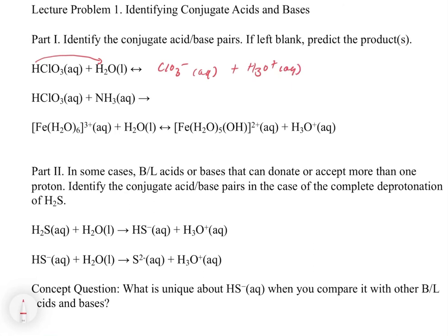To identify the conjugate acid-base pairs, we draw lines connecting them. HClO3 is the acid and ClO3- is its conjugate base — that's our first conjugate acid-base pair. In the forward direction, the proton is being transferred to the water; in the reverse direction, the proton is transferred from the hydronium to the chlorate anion, meaning chlorate acts as a base on the right-hand side. For water: on the left-hand side water is acting as a base, and on the right-hand side the hydronium is acting as an acid. That is how you identify the conjugate acid-base pairs.